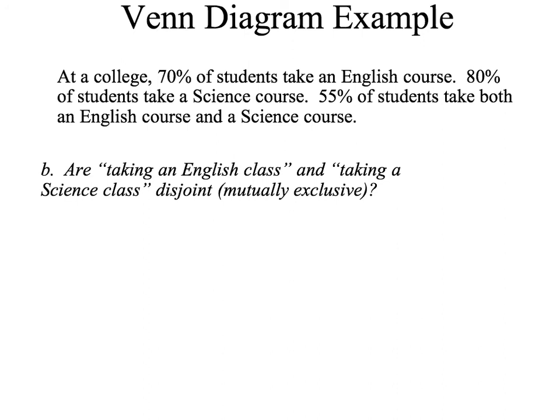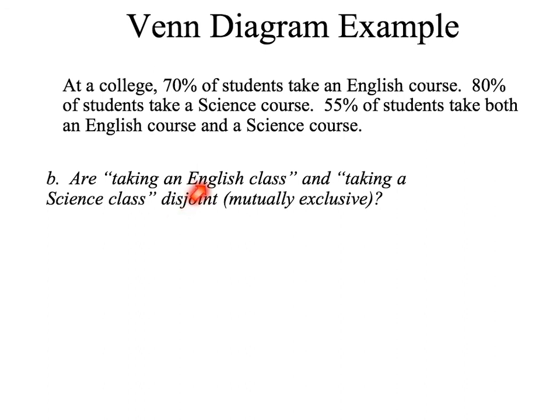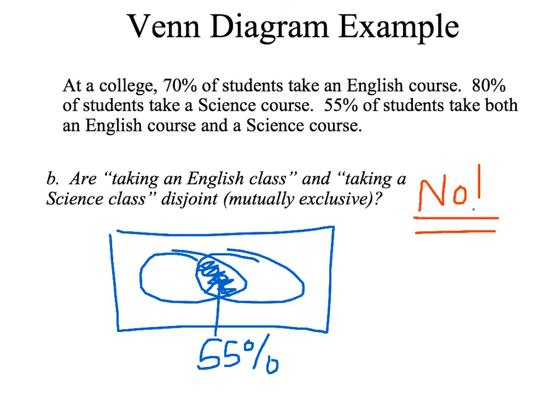So just a quick question here. Are taking an English class and taking a science class disjoint or mutually exclusive? If you think about that Venn diagram I drew for you, does that mean do they happen at the same time? Is there any area right in here? This is the place where people are both taking an English class and taking a science class. Well this area was 55%. So therefore is it possible to take an English class and take a science class? Well heck yeah, because 55% of people are doing that. So the answer to the question are taking an English class and taking a science class disjoint? The answer is no, because 55% of people are doing both.